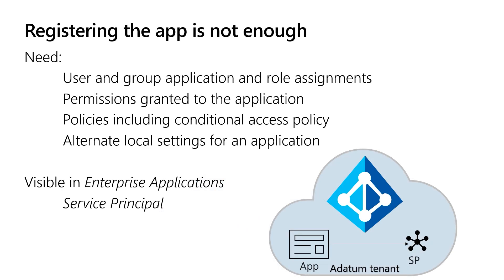We need more than just the application registration to really manage how this application is going to work in that single tenant. We need another location — an enterprise app or service principal — so that IT can decide which users and groups are allowed to this application. They're the ones who are going to be granting consent for any resource access. And if the application is quite sensitive or there are zero trust policies in the enterprise, they can require MFA for this application. The enterprise apps blade is how IT controls how any particular application works inside of that tenant.